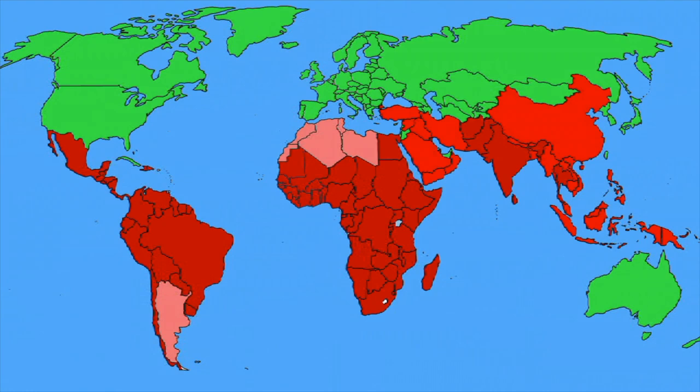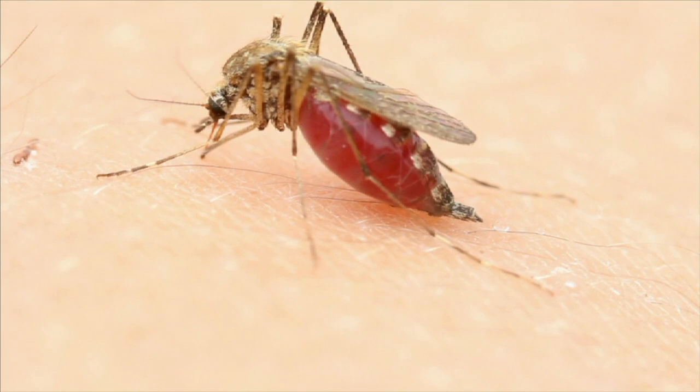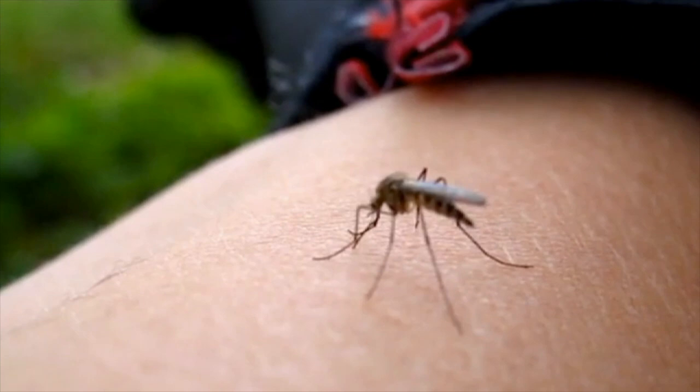A female mosquito transmits diseases by biting an animal to get blood. A tiny food tube sucks out the blood. When the mosquito bites its next victim, the disease-causing organisms are transferred through the mosquito's saliva.